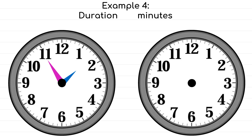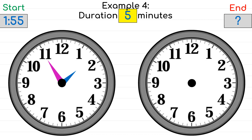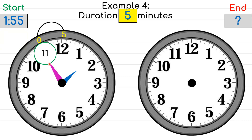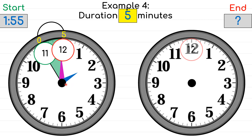Let's try another example. The starting time points at 1:55 and we want to know the ending time after 5 minutes. The minute hand is pointing at 11, so draw a circle over it and skip count: 0, 5 — and we have reached 5 minutes. So 5 minutes have passed and the time is now showing 2 o'clock. The ending time is 2 o'clock.